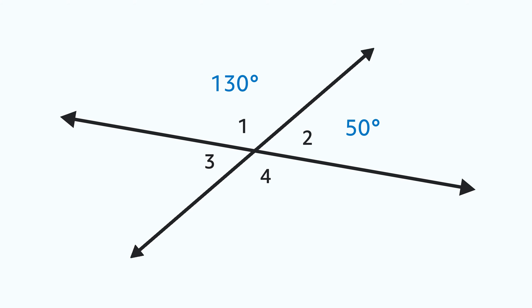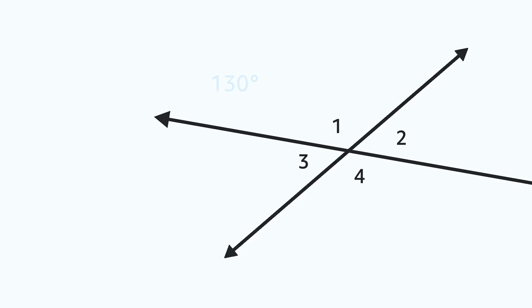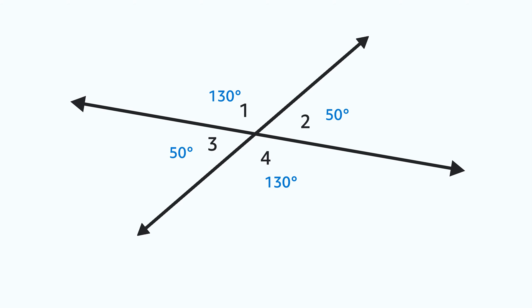The same works for angles one and three. And then we can use what we know about angle two to pair it up with angle four to find that angle. When it's all said and done, it looks like this. Notice that the angles opposite one another have the same measure. These angles are called vertical angles, and they're always congruent, which is geometry speak for having the same measure.